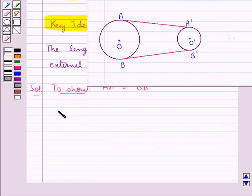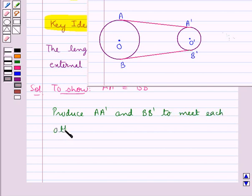First of all, we produce AA dash and BB dash to meet each other at point P. So we have produced AA dash and BB dash to meet at point P.